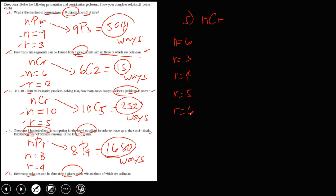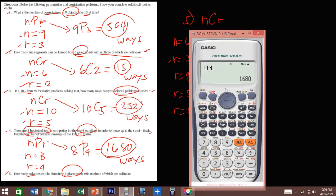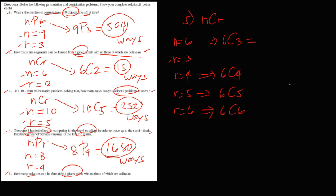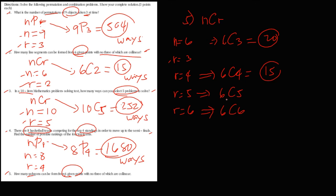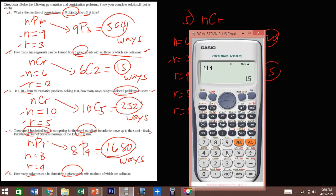Starting with r equals 3, we get 6C3 equals 20 ways to form a triangle. For r equals 4, we get 6C4 equals 15 ways for a rectangle. For r equals 5, we get 6C5 equals 6 ways for a pentagon.